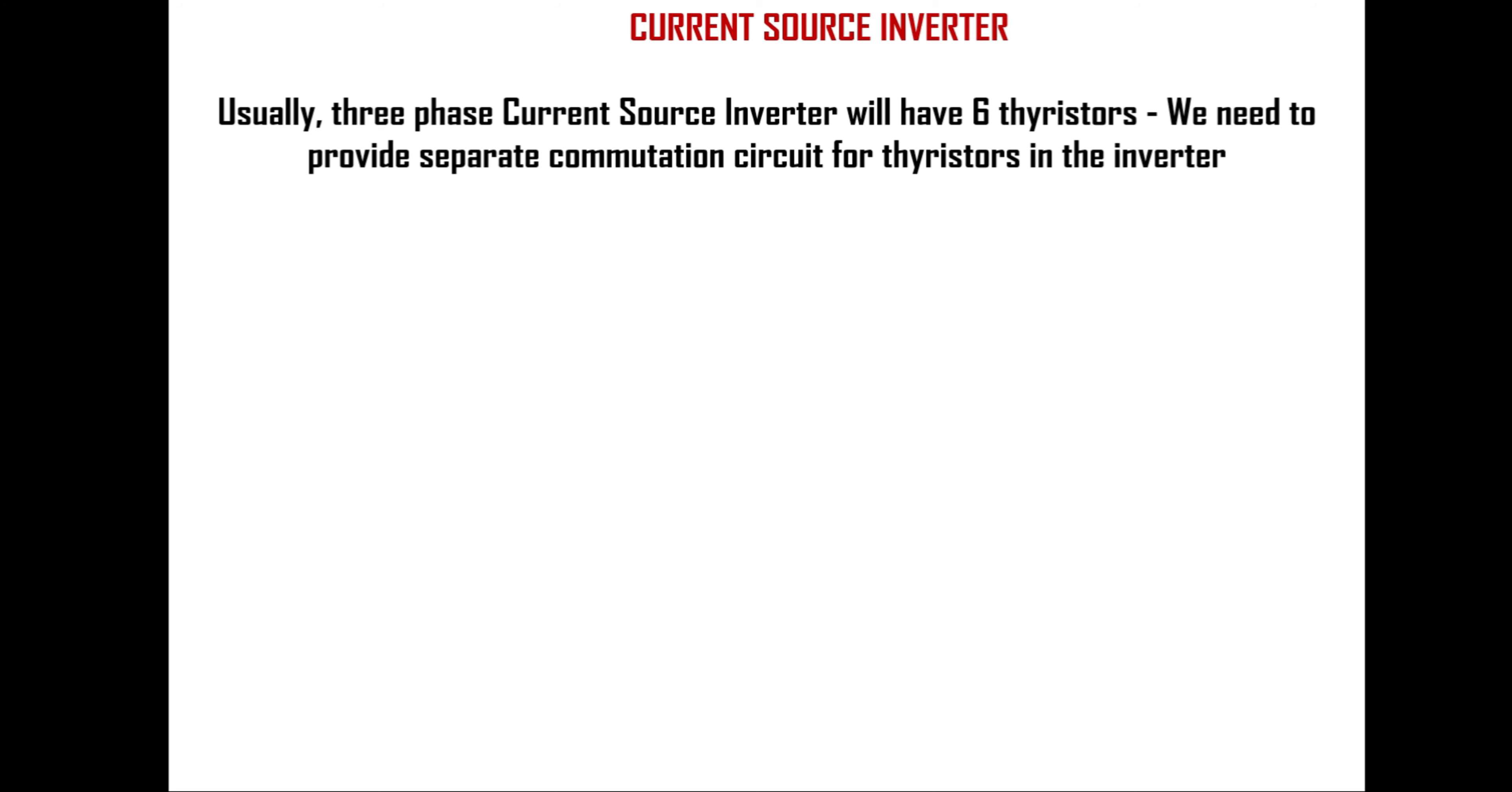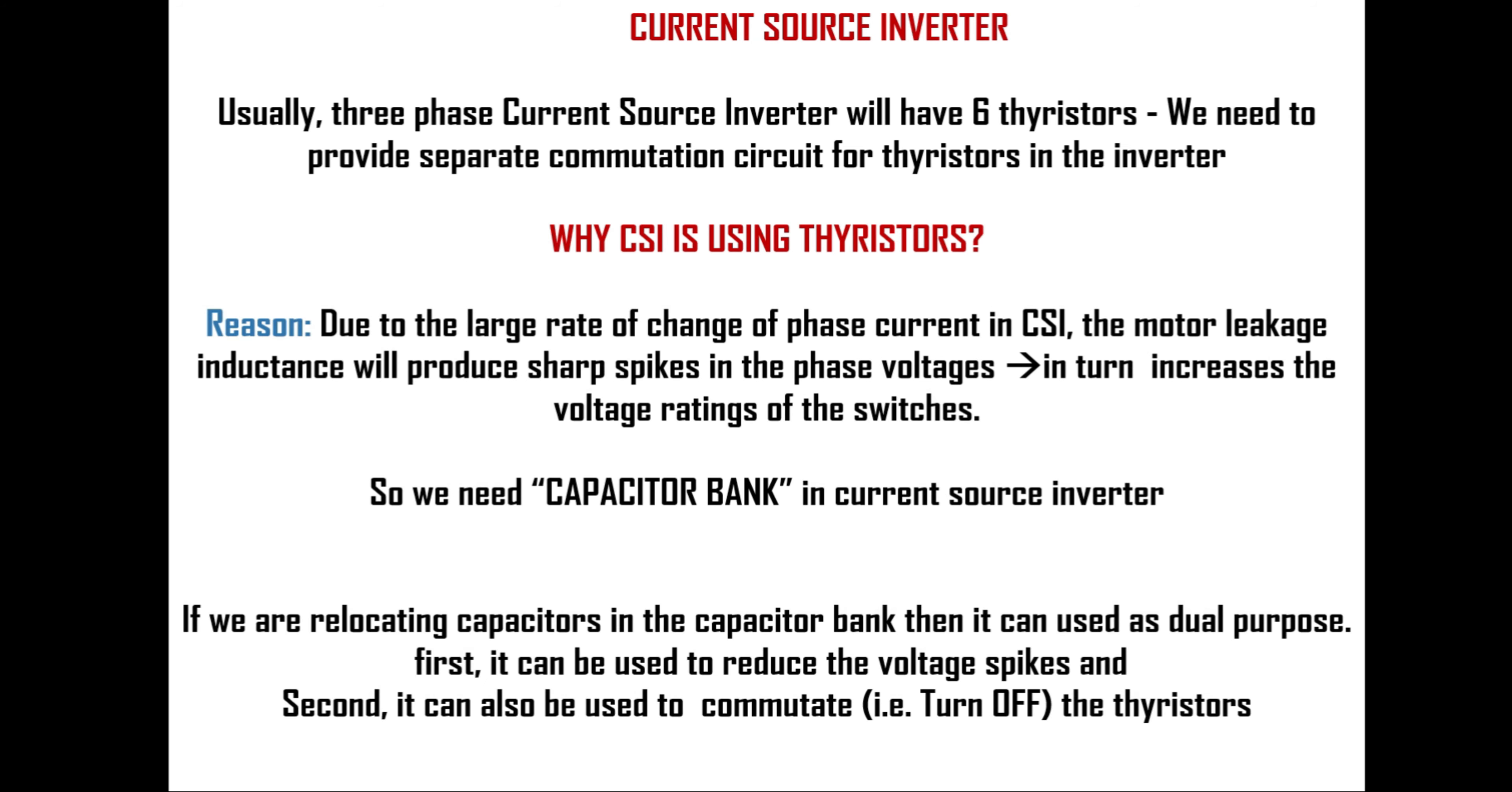Before seeing the commutation circuit let's see why current source inverters are using thyristors. Due to switching actions of thyristors there will be a large rate of change of phase currents and hence the motor leakage inductance will produce sharp spikes in the phase voltages. To avoid this we generally provide a capacitor bank in current source inverter.